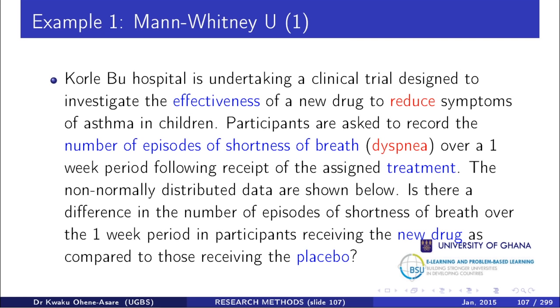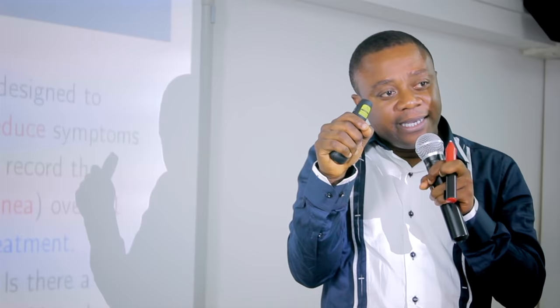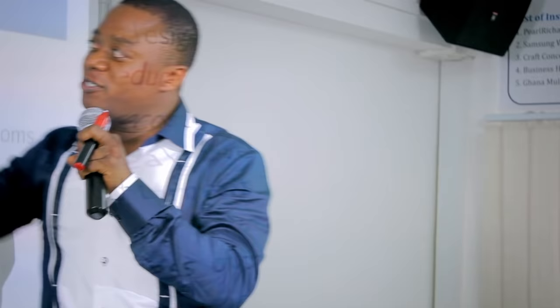Now that you know how to write null and alternative hypotheses, we are ready to do the Mann-Whitney U test. The reason it is called Mann-Whitney is that it was postulated by two people in 1947 — Mann and Whitney. Wilcoxon was also working on the same thing simultaneously in a different country, and it was published the same year, which is why it is also called the Wilcoxon rank-sum test.